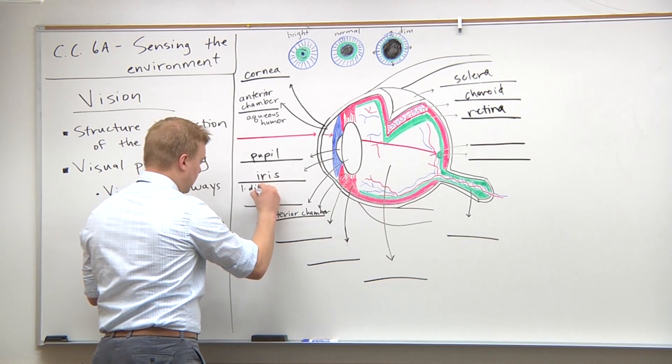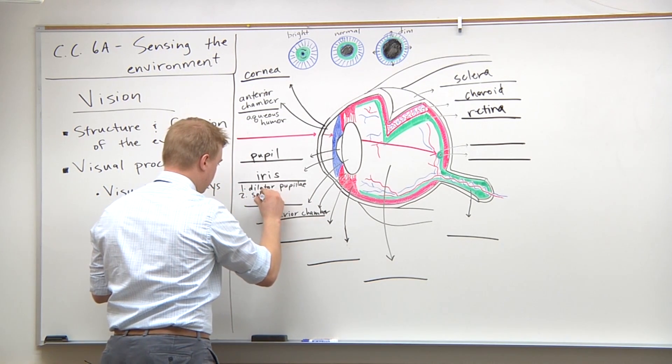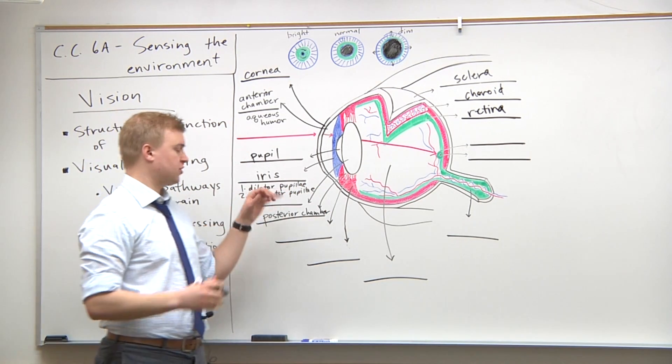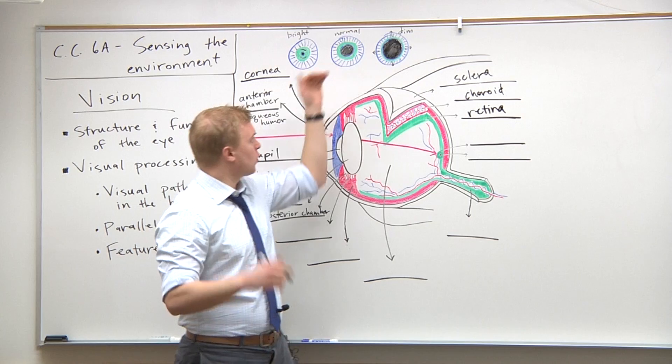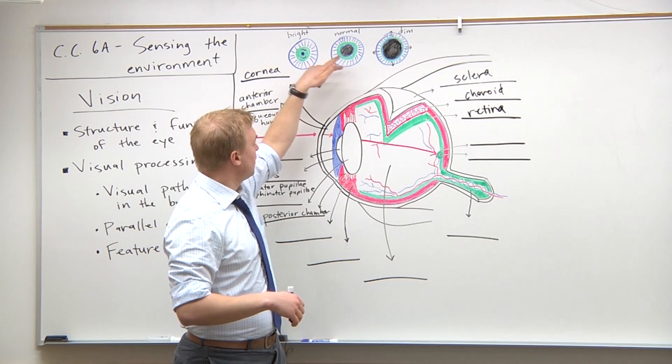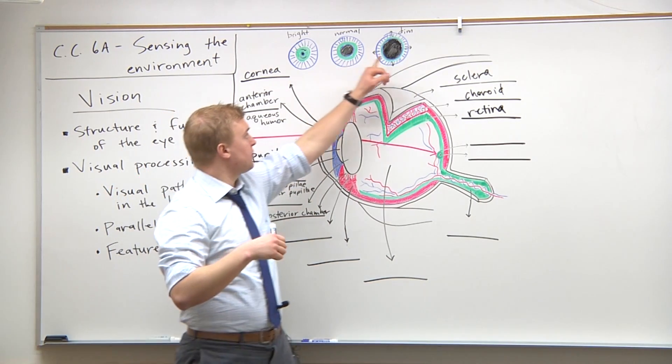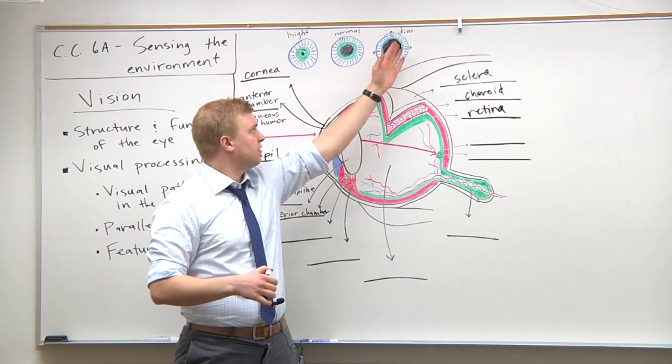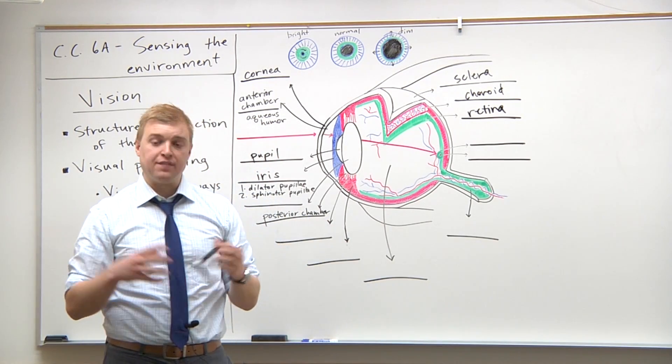The first is the dilator pupillae. The dilator pupillae dilates the pupil. This is possible because the dilator pupillae muscle runs radially into the eye, like bicycle spokes. When it contracts, it pulls outward and enlarges the size of the pupil. This happens in a very dimly lit room and is also a byproduct of processing important or difficult information.